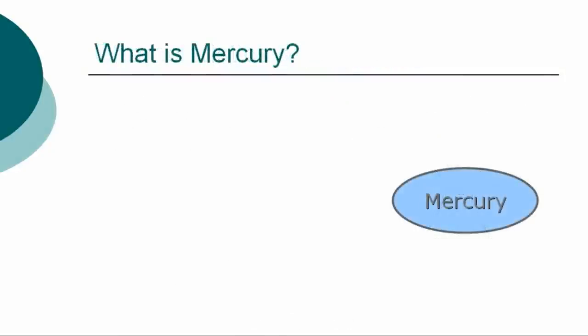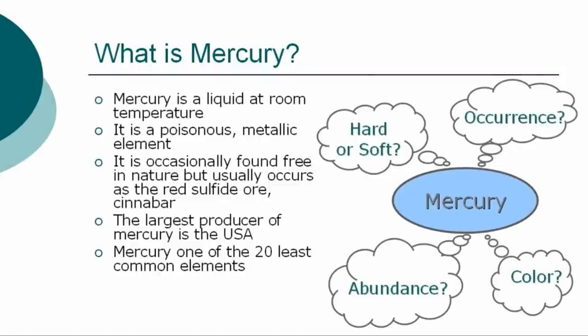In a general overview of the element, we can first describe mercury as a liquid. It is a liquid at room temperature and one of the 20 least common elements. It is a poisonous metallic element. Mercury is occasionally found free in nature, but usually occurs as the red sulfide ore cinnabar. The largest producer of mercury is the USA, followed by Italy and Spain.